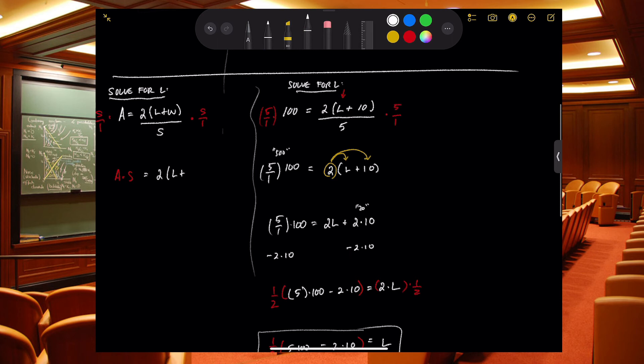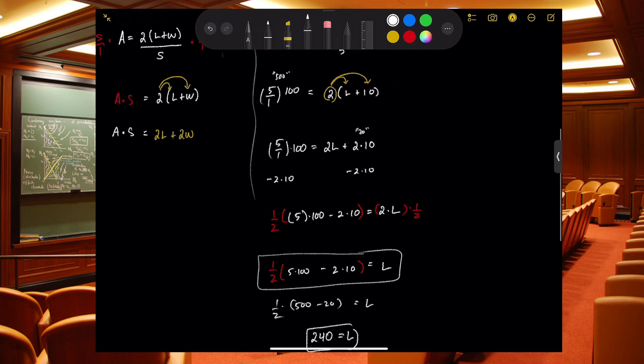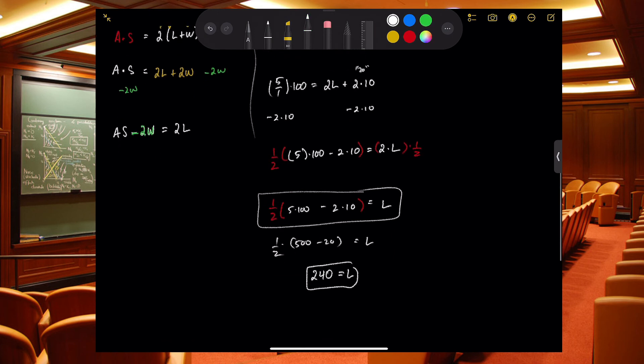Then again I could either divide by 2 or multiply by half or distribute this through. I'm trying to get L by itself, so I'm unpacking: 2L plus 2W equals A times S. Subtract stragglers over, right, to get rid of those pieces. So subtract a 2W from both sides. So AS minus 2W equals 2L.